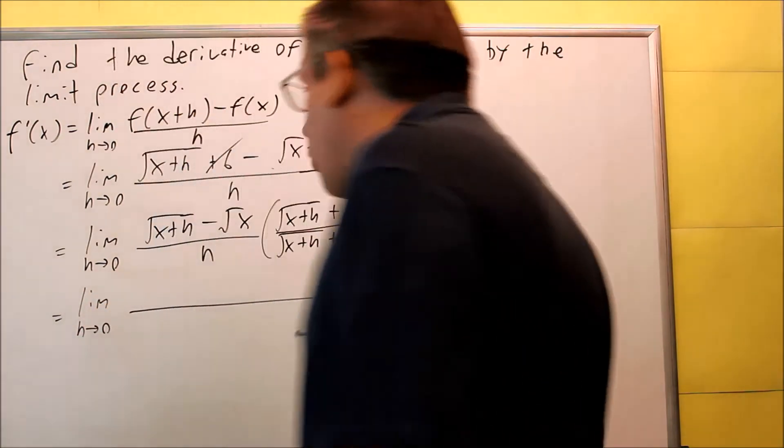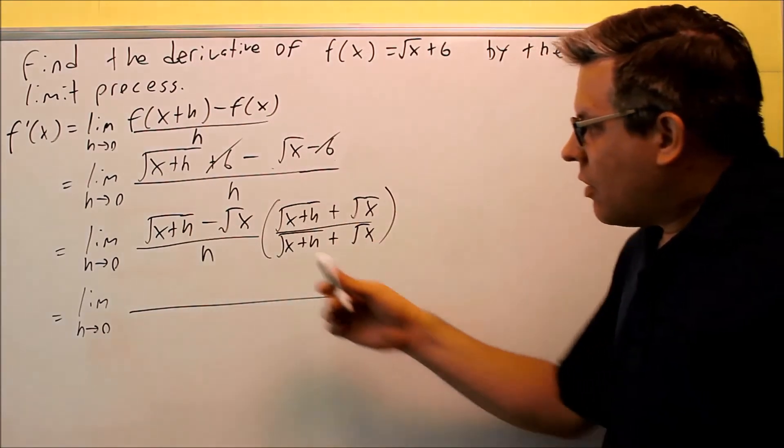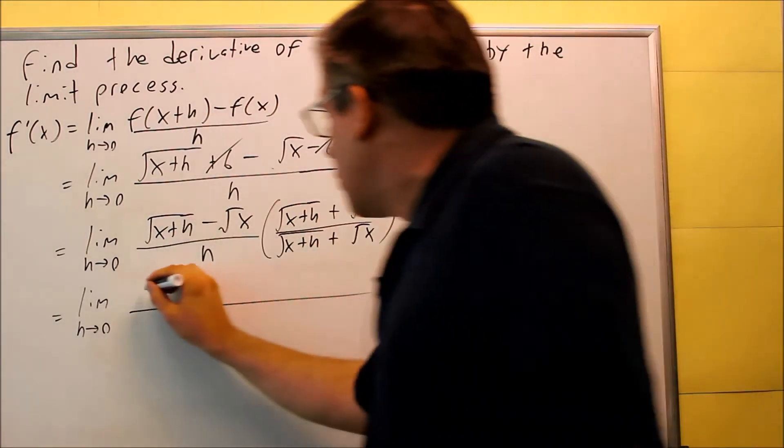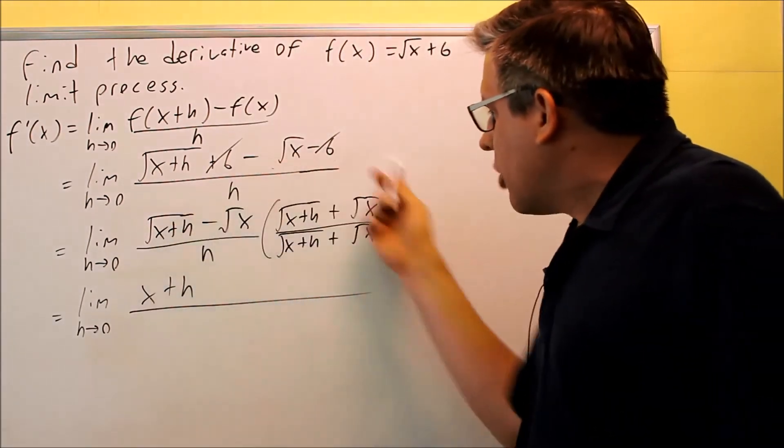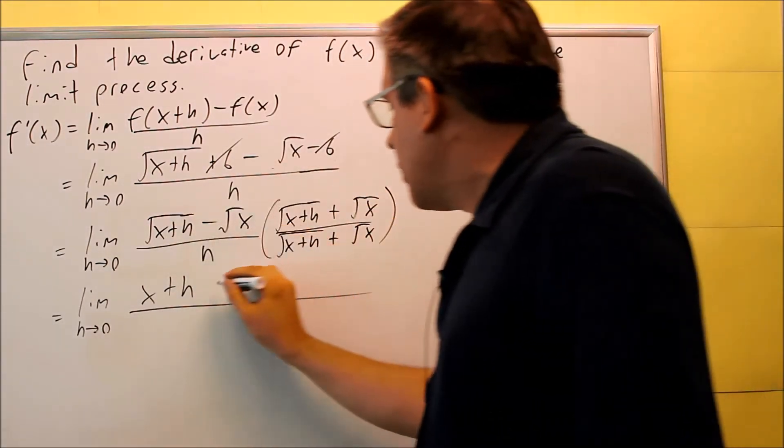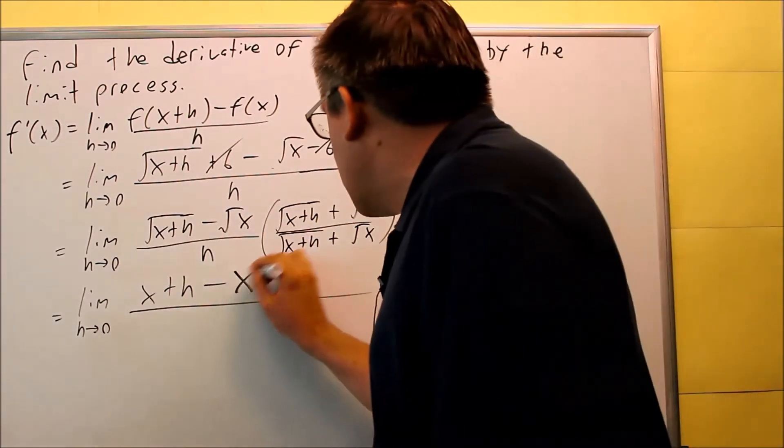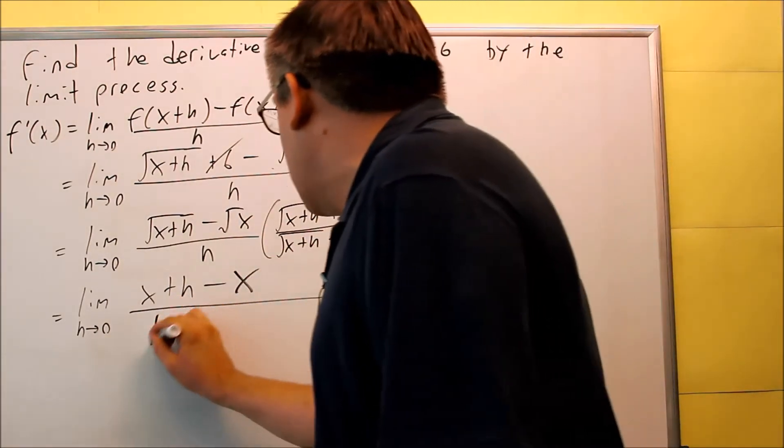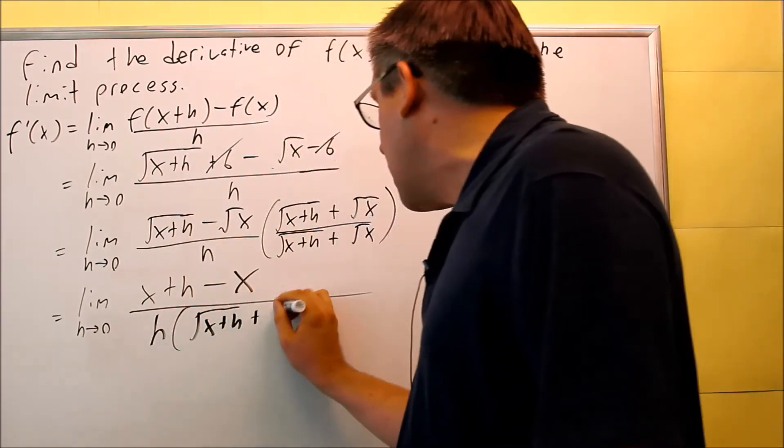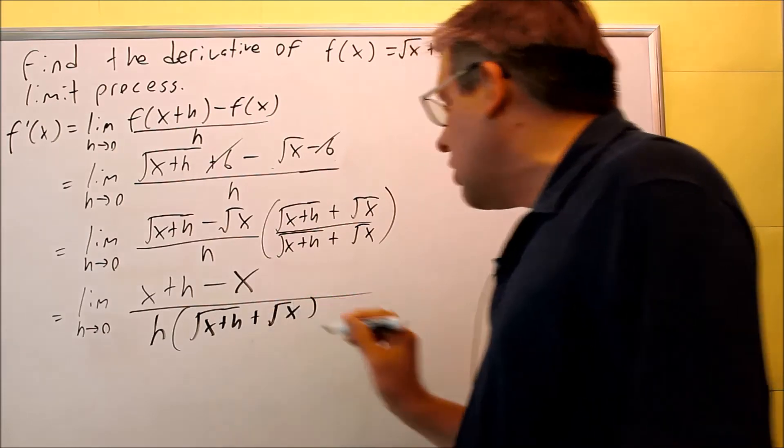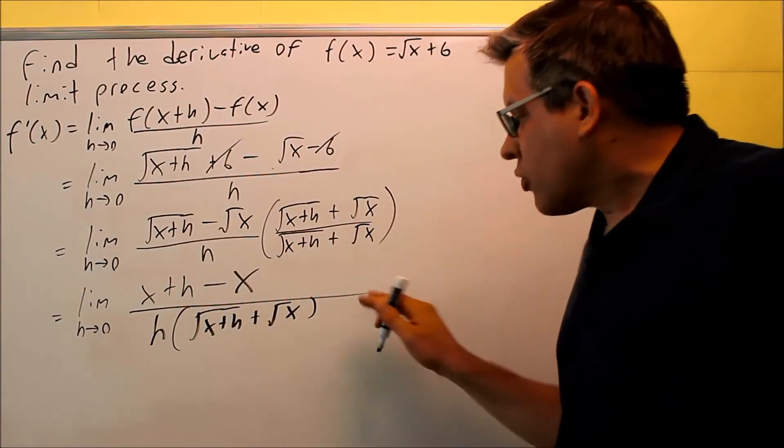All right, so on the top, when we multiply that through, this times this, the roots going to cancel. You're going to be left with just x plus h. Middle terms are going to cancel, and you end up with a minus square root of x, and square root of x will give you just x. And then the bottom, I'm going to leave all this in the factored form because most likely we can cancel something out later. So here's what's going to happen.